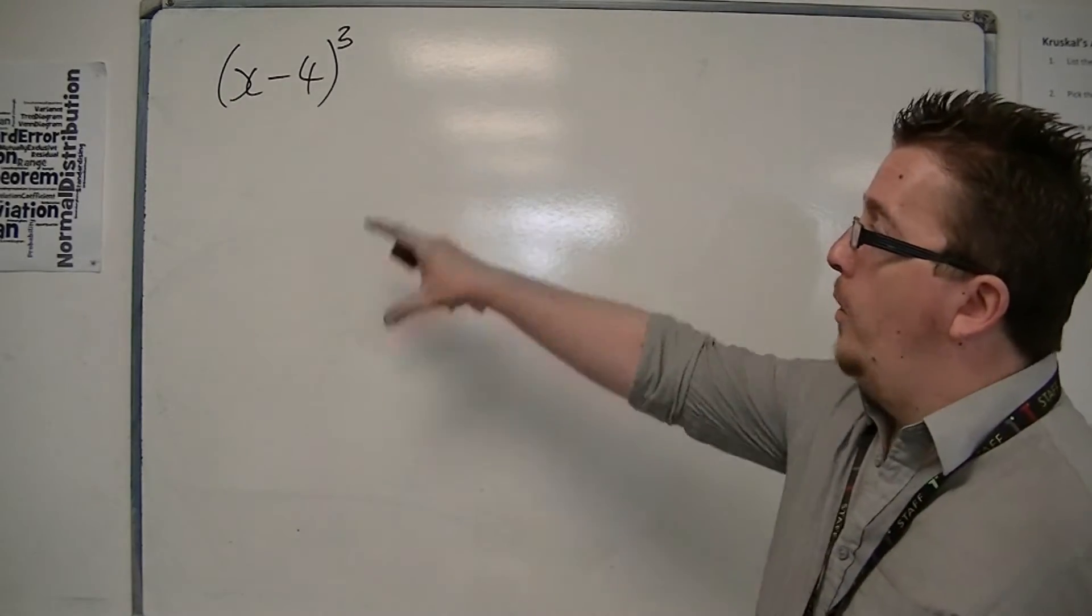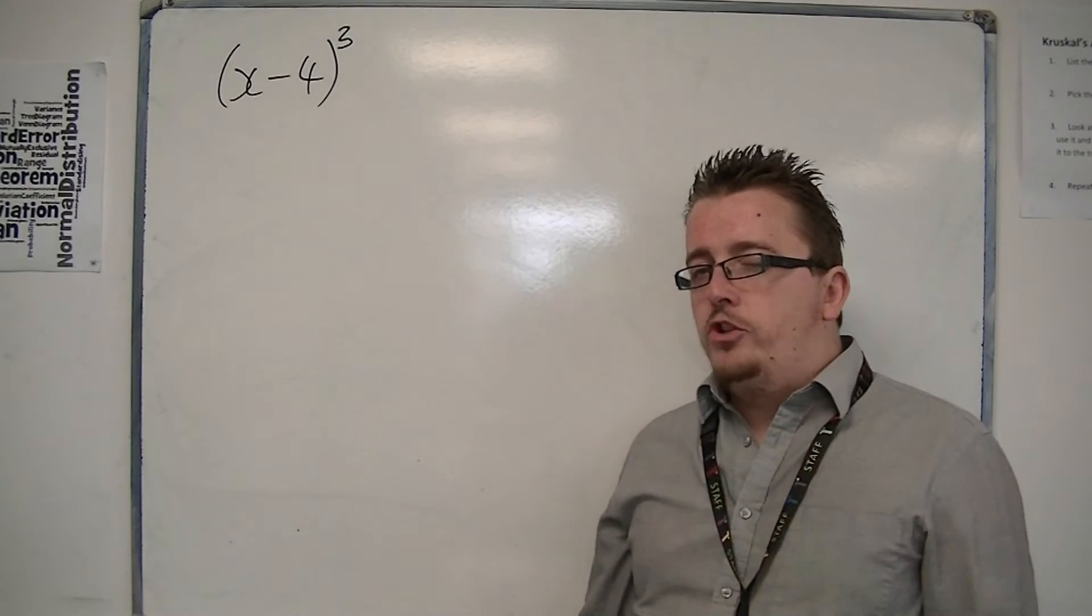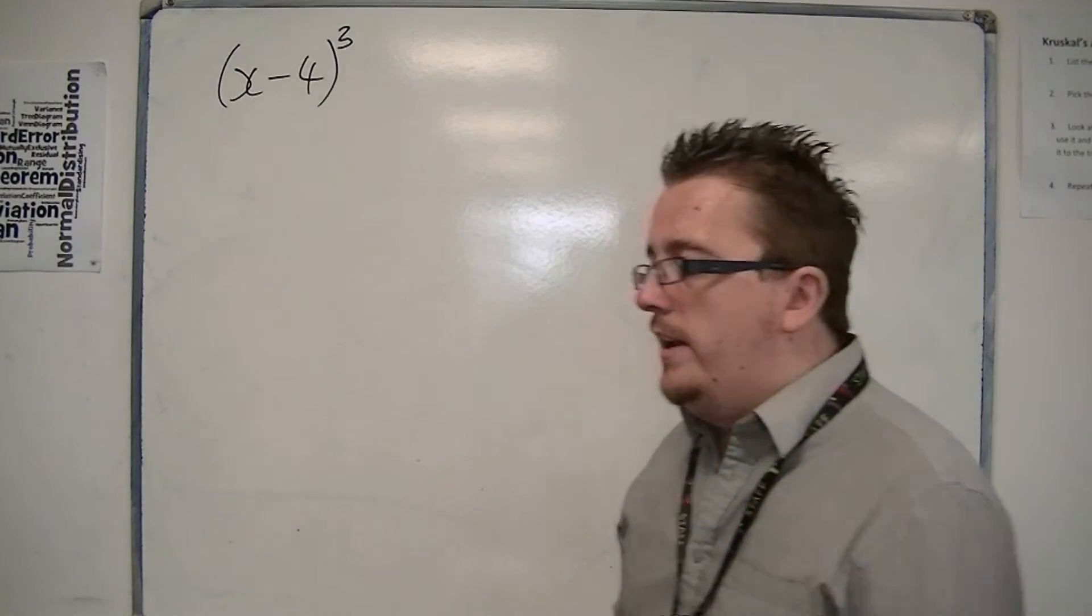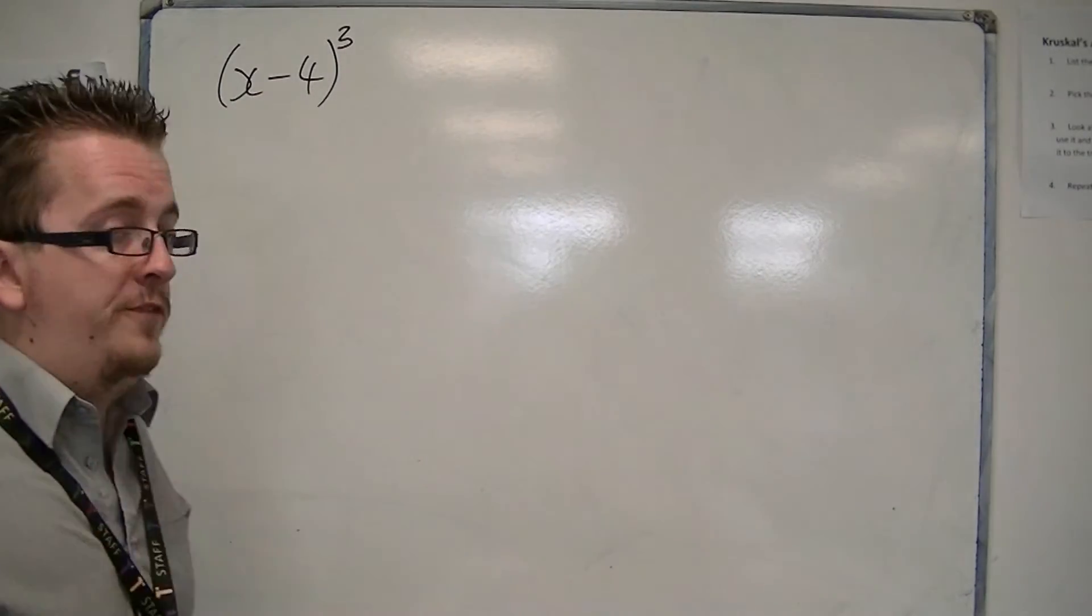So I'm going to work with the example that we have, this x minus 4 cubed. And my suggestion to you is really leave one of the brackets alone and multiply out the other two first.